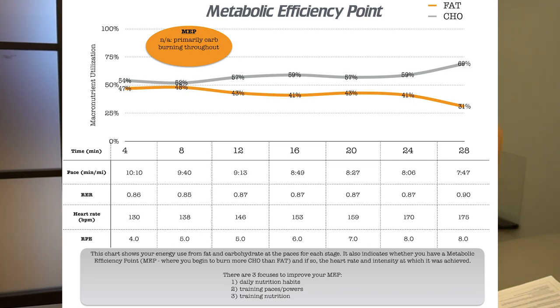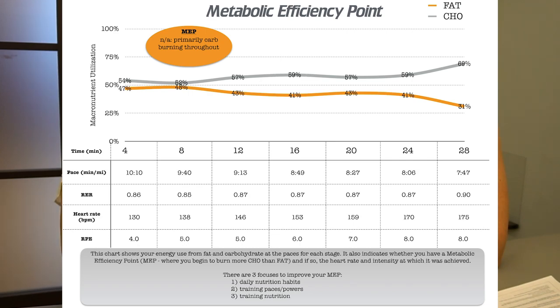RER is the respiratory exchange ratio — that's the difference between oxygen uptake and carbon dioxide output. That number goes from 0.7, which is 100% fat burning, to 1.0, which is 100% carb burning. So 0.85 is generally 50/50, but based on the actual measurement you're 52% carb and 48% fat.